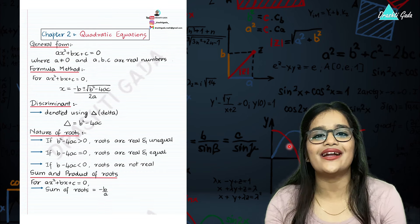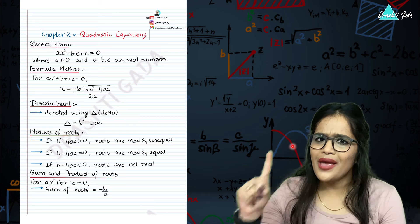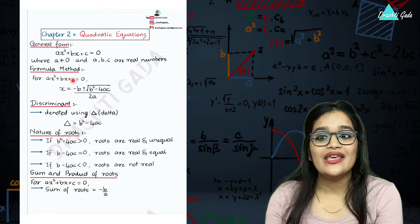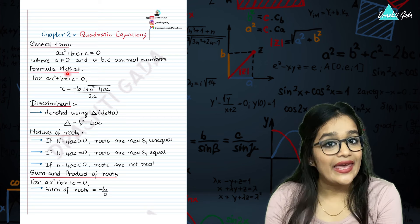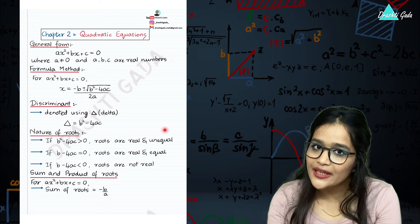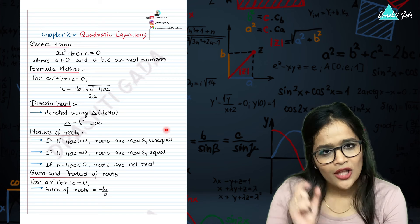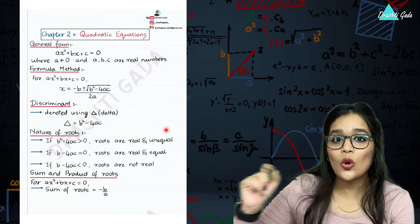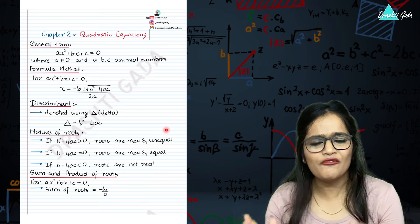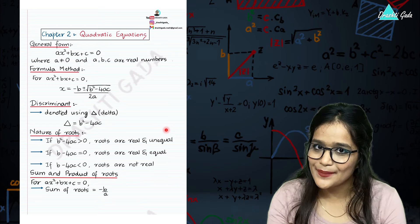Now let's talk about the second chapter, that is quadratic equations. The first important thing is the standard form: ax squared plus bx plus c is equal to zero. If it is a quadratic equation, then the coefficient of x squared should not be equal to zero. The other coefficients and constants are real numbers.